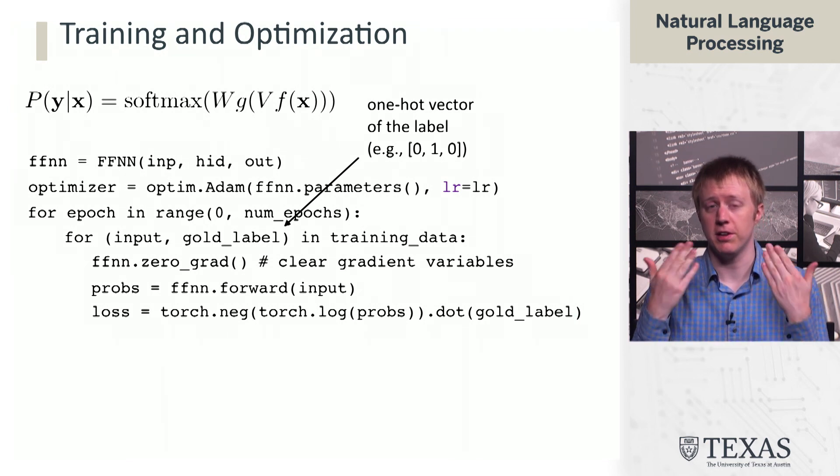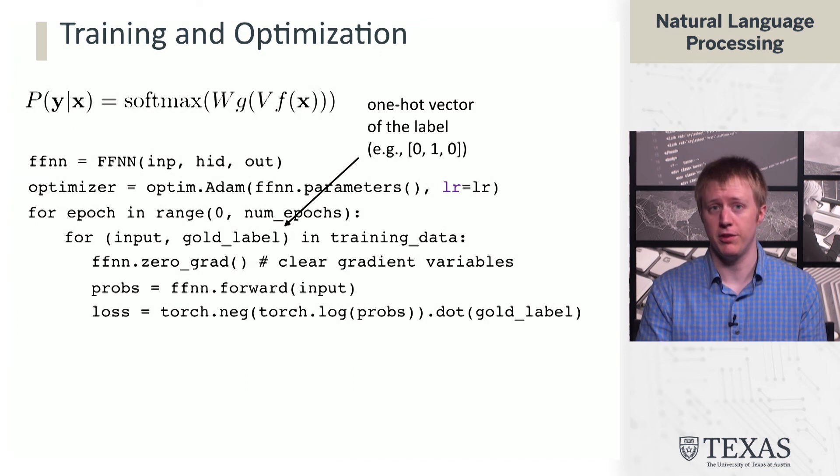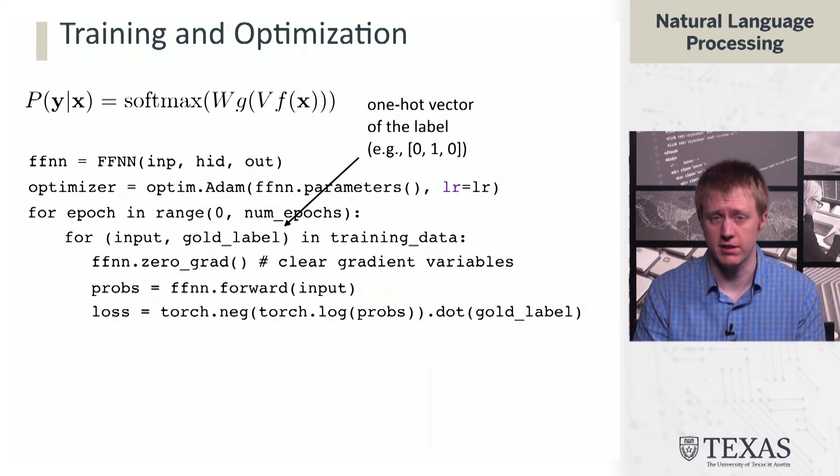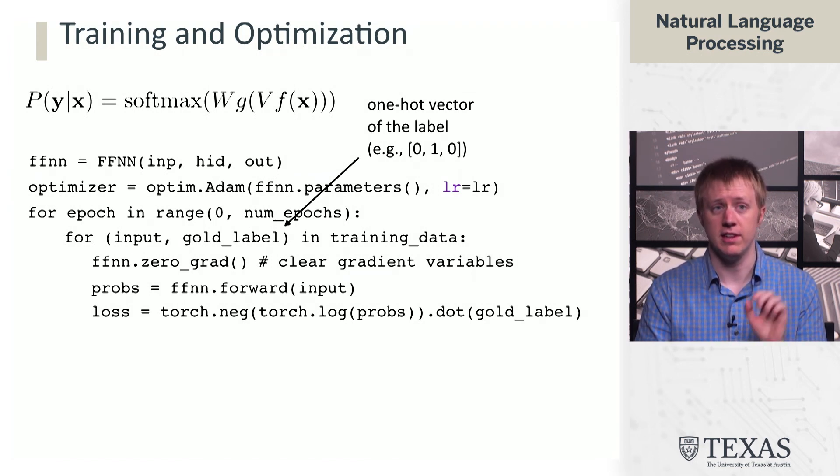Now we need to compute a loss. This is showing the explicit loss computation. There's plenty of built-in losses in PyTorch. NLL loss implements what's here. You have to make sure that you pass in the right thing, whether it's log probabilities or logits. Just make sure you check the documentation for whatever you use. Here what we want to do is we take the negative log of these probabilities and then we dot it with the gold label. We think of that as a selector operation. That's going to give us the negative log probability of the correct label, which is our negative log likelihood loss.